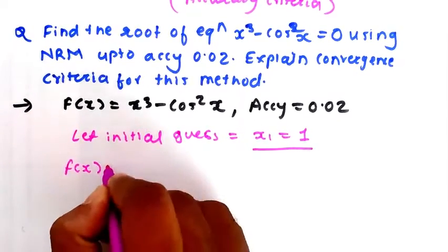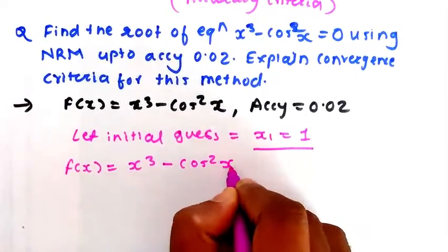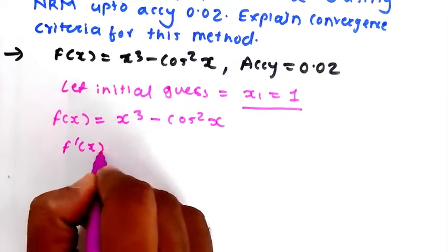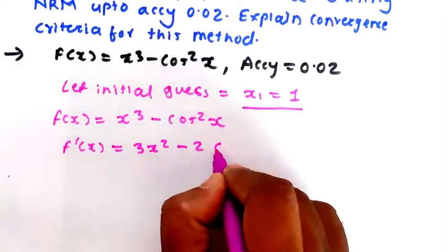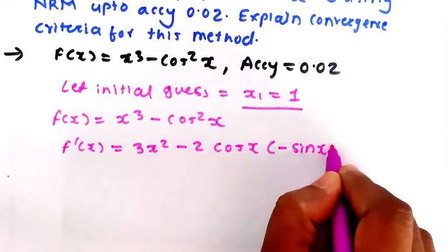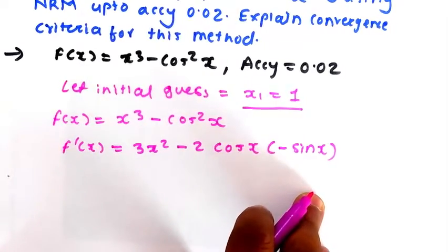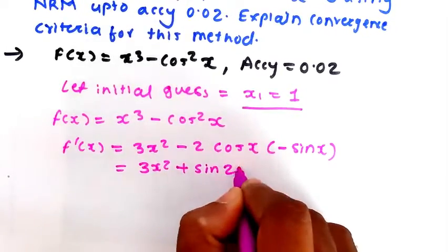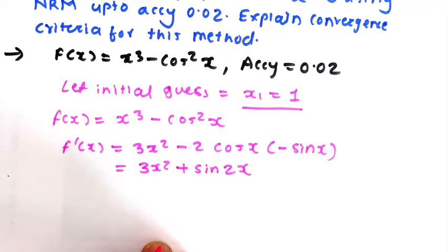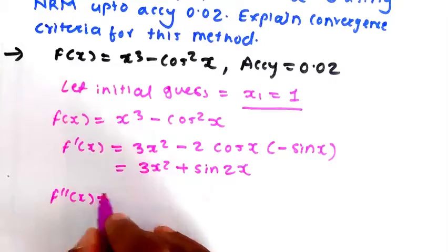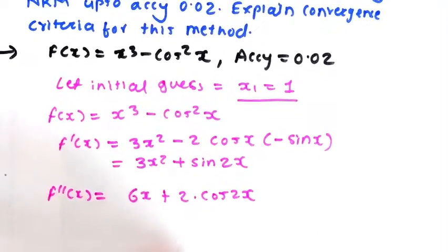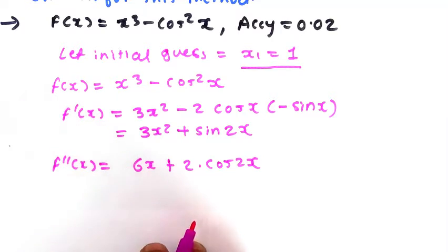First, find f(x) = x³ - cos²x. Differentiating with respect to x gives f'(x) = 3x² - 2cos(x)·sin(x), which simplifies to 3x² + sin(2x). Further differentiating gives f''(x) = 6x + 2cos(2x).